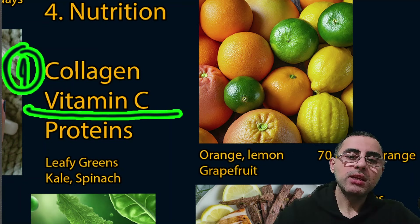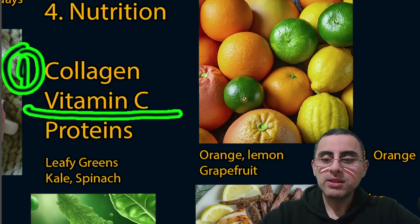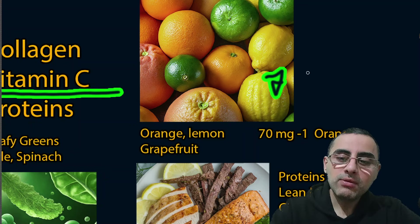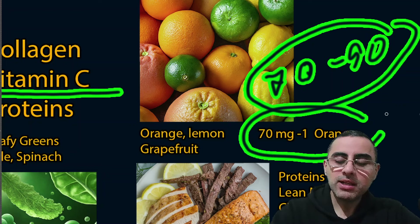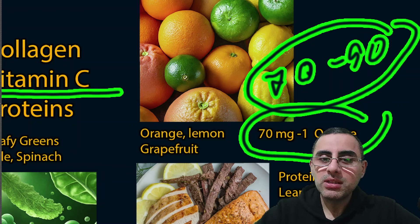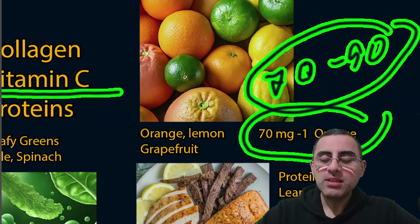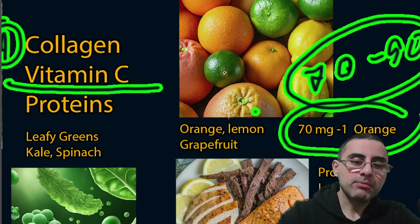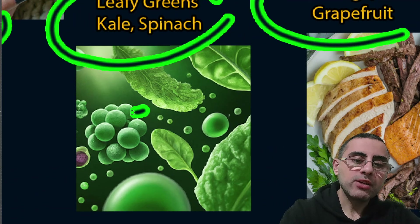Vitamin C sources are very important because vitamin C stimulates the creation and production of collagen. Sources include citrus fruits like oranges, lemons, grapefruit, and mandarin. Humans require around 70 to 90 milligrams of vitamin C daily, and one medium orange contains around 70 milligrams — so citrus fruits make it very easy to get a significant amount of vitamin C.